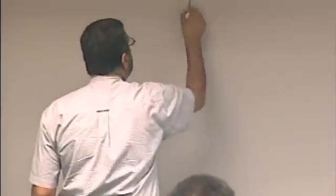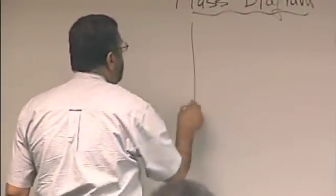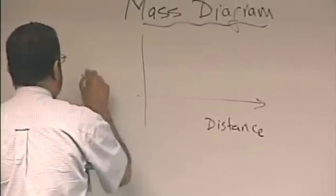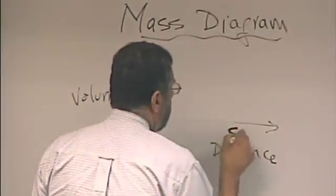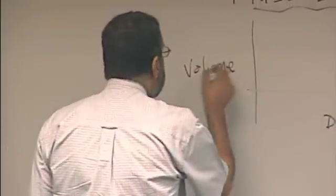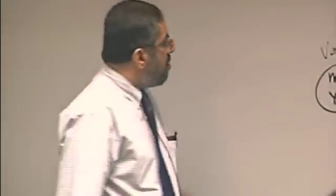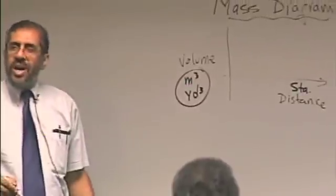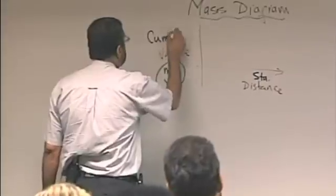What is a mass diagram? A mass diagram is a relationship between distance and volume. The distance normally we express in stations. A station is a hundred feet or a hundred meter and the volume we express either cubic meter or cubic yard. But the word volume by itself is not sufficient to say that this is a mass diagram. No, I have to add another word to the word volume and this is something very important. Cumulative volume. Cumulative.